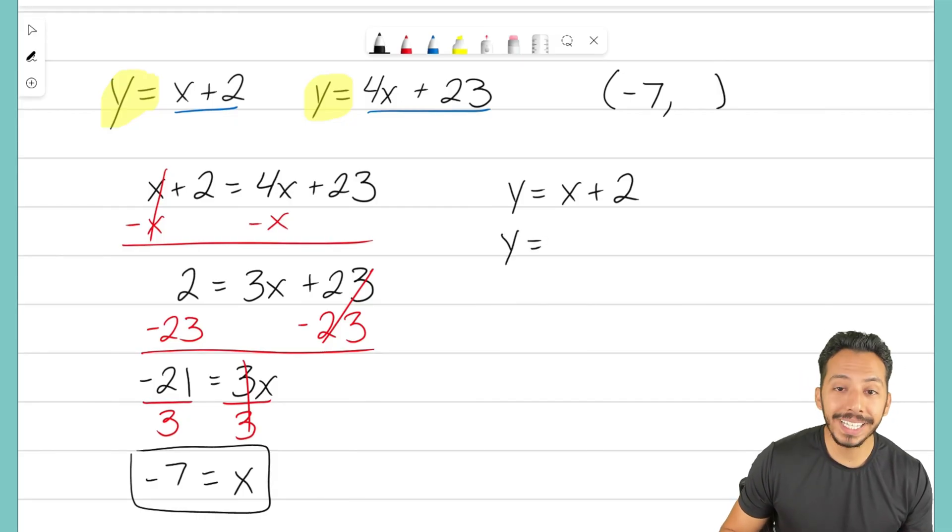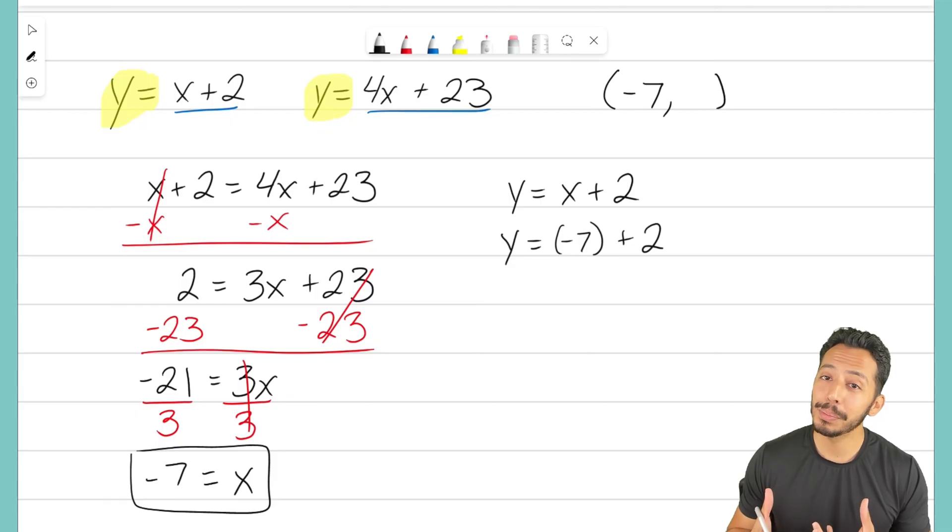So again, what is x? Well, we solved for x, and x ended up equaling negative 7. So I have negative 7 plus 2.